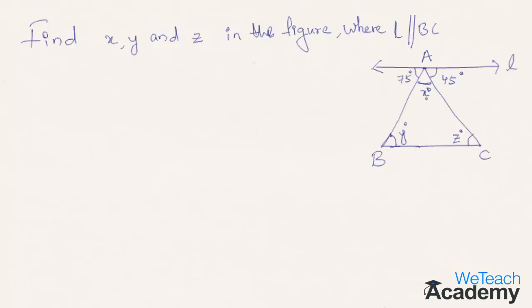You already know that the sum of angles on a straight line is always supplementary. That is, 75 degrees plus x degrees plus 45 degrees equals 180 degrees, since they are all angles on the straight line L.